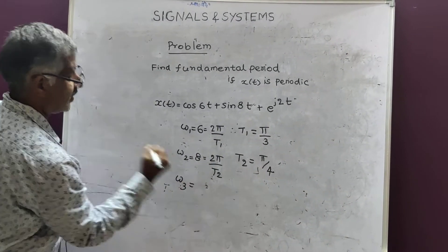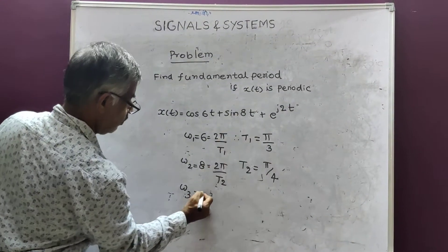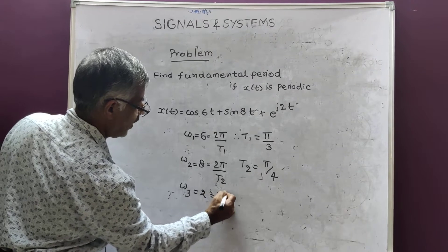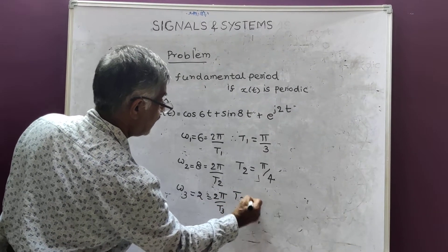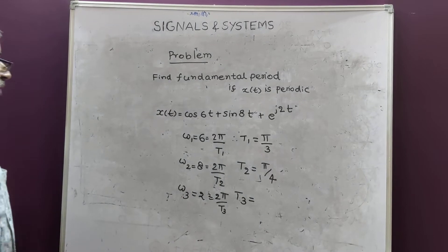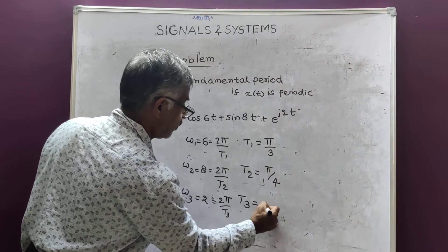Third one. Omega 3 is equal to 2. 2 is equal to 2π by t3. Therefore, what is t3? t3 is equal to π.